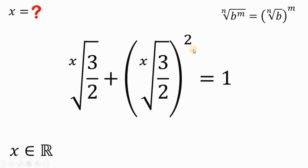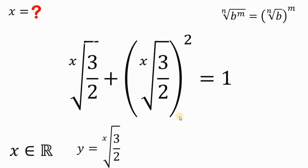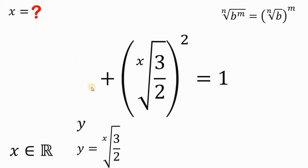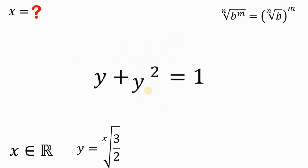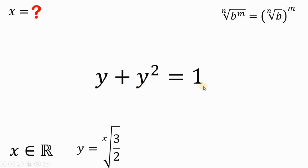Take note that we have similar terms: x root of 3 over 2. So we can replace this with another variable — let's call this y. Therefore, this expression is just y, and this expression right here is just y squared. Now we have a quadratic equation in terms of y: y plus y squared equals 1.